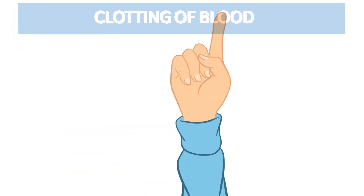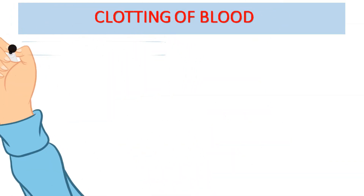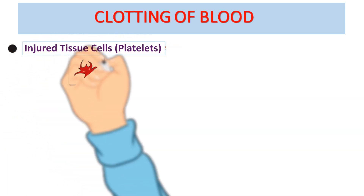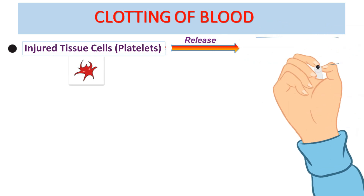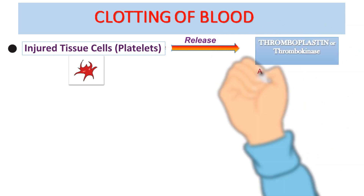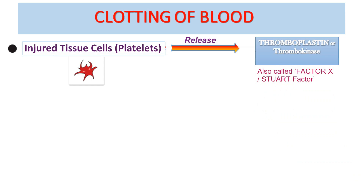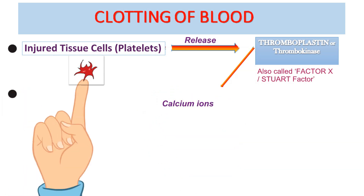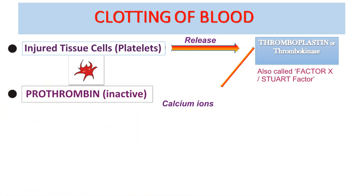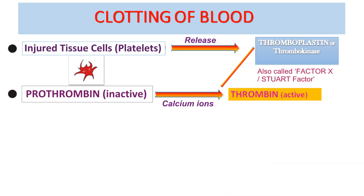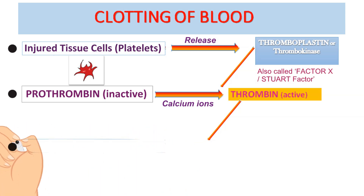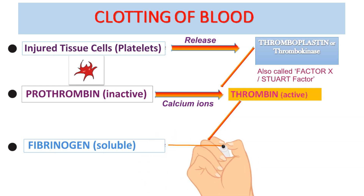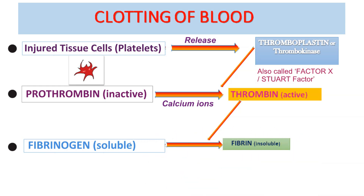The clotting process occurs in a series of steps. The injured tissue cells and the platelets which disintegrate at the site of the wound release a substance called thrombokinase or thromboplastin, also known as factor X or Stewart factor. This thrombokinase acts as an enzyme and, with the help of calcium ions present in the plasma, converts the inactive substance prothrombin into active thrombin. This thrombin in the presence of calcium ions reacts with the soluble fibrinogen of the plasma and converts it into insoluble fibrin. Fibrin is a solid substance that forms thread-like structures.